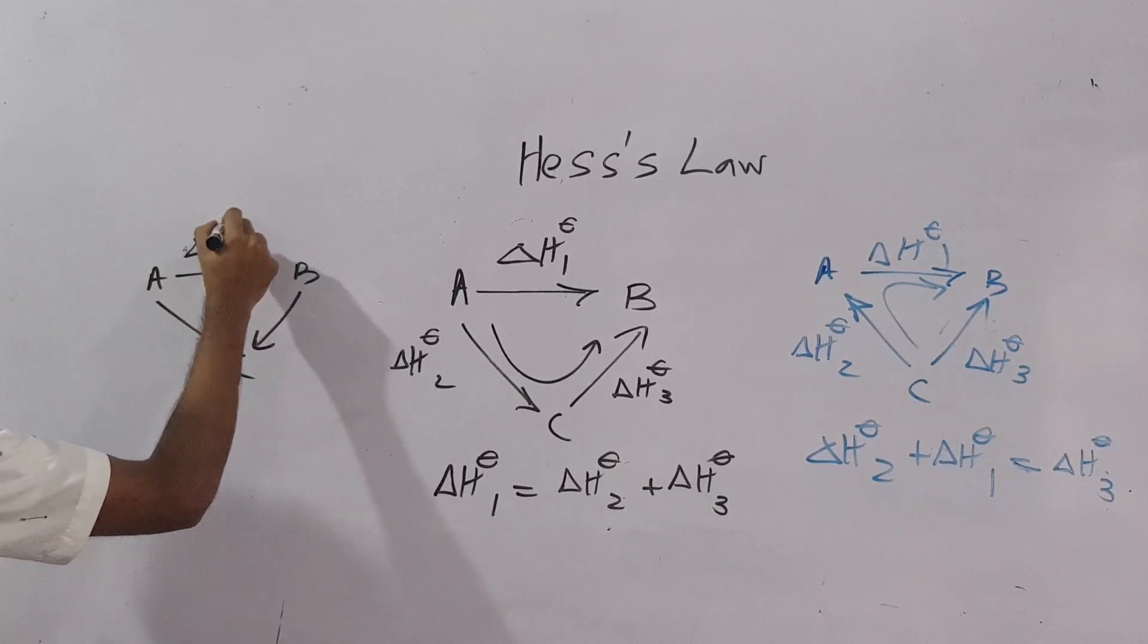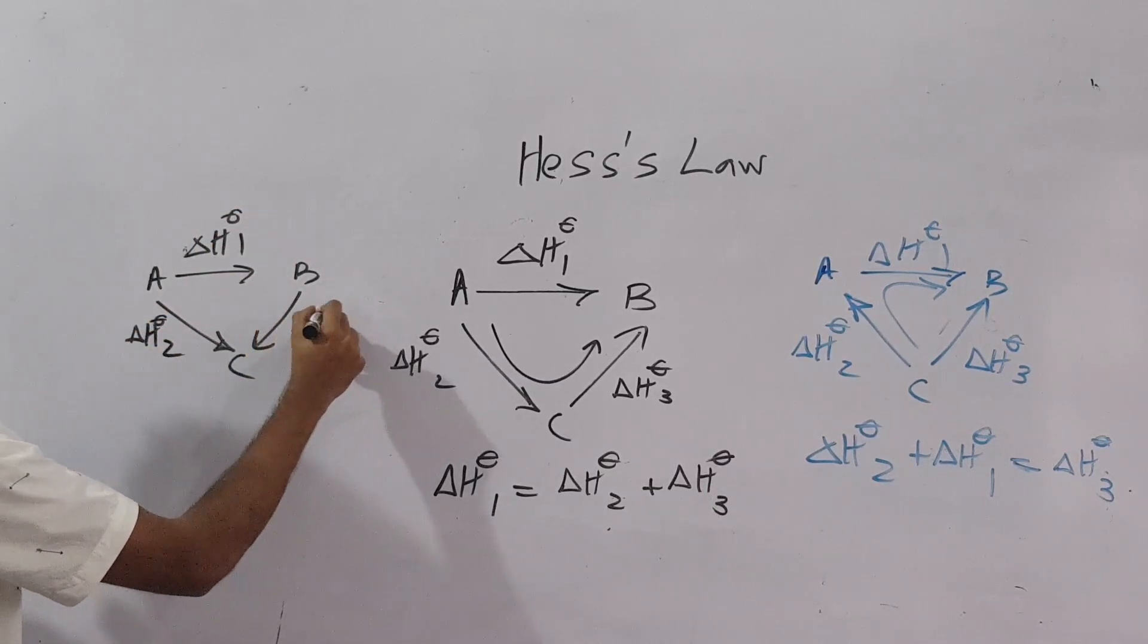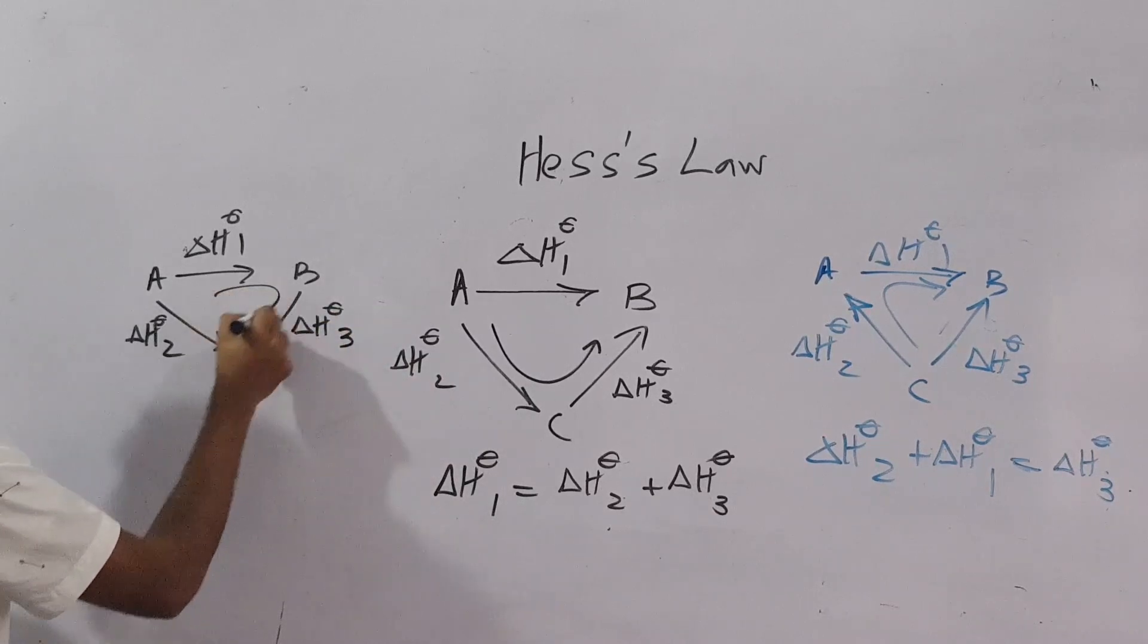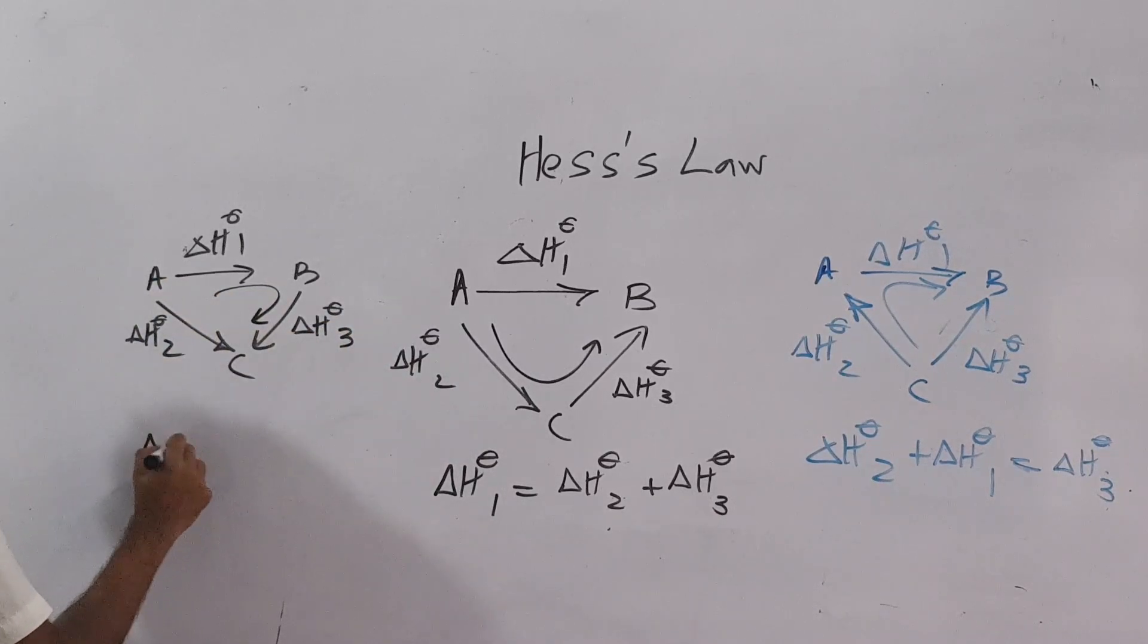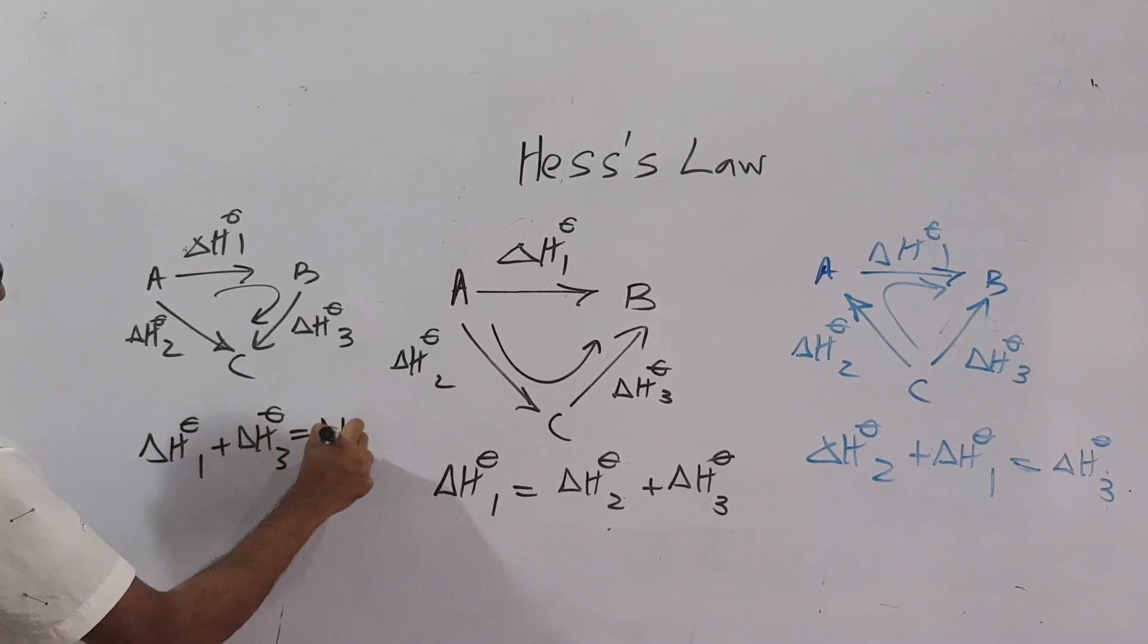If this is delta H standard 1, this is delta H standard 2, if this is delta H standard 3, these two equals this one. So delta H standard 1 plus delta H standard 3 equals to delta H standard 2.